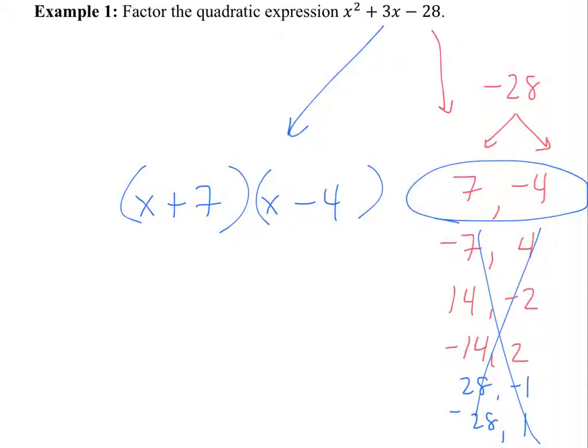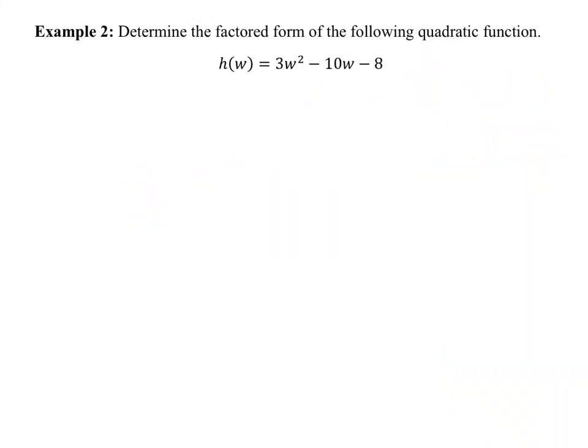Now let's go on to what's called the AC method. The AC method occurs when there is not a 1 in the front of x squared. When there's not a 1 in the front, you're going to use the AC method, which is also called grouping. Here's how I do the AC method: I approach the problem by looking at it and first find out what the quantity AC is — the product AC. What's A in this problem? 3. What's C? Negative 8. What's 3 times negative 8? Negative 24.